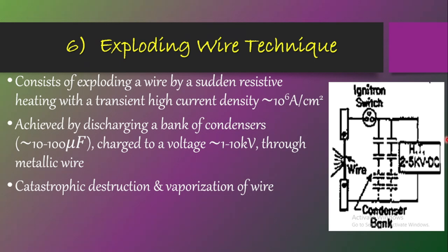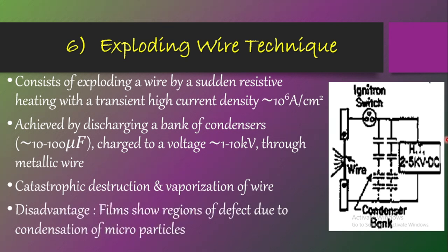Due to the destruction from the explosion, there is a rise in temperature which evaporates the target material, finally leading to thin film deposition. However, the thin films formed show regions of defects due to condensation of microparticles spattered during the explosion. Just as an explosion adversely affects its surroundings, the high-voltage wire explosion disturbs the film quality, creating regions with defects. This is the main limitation of the exploding wire technique.